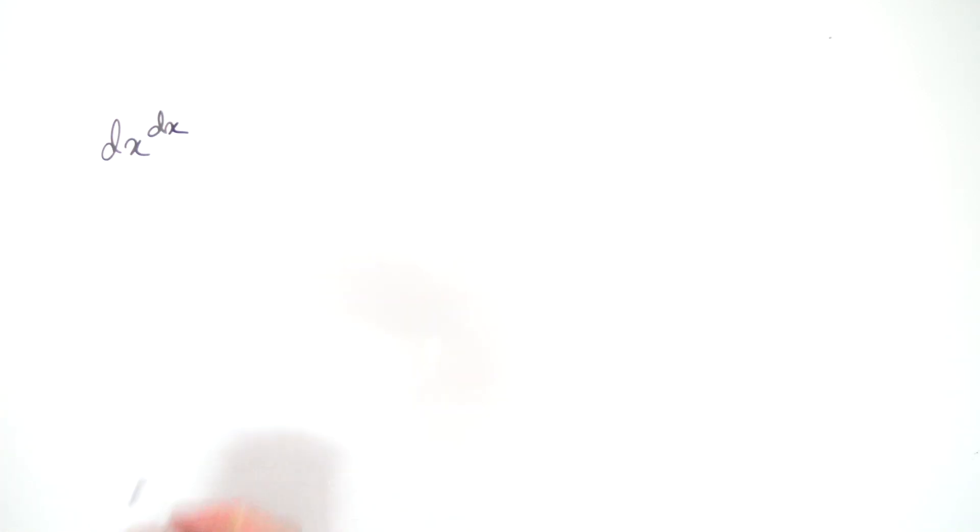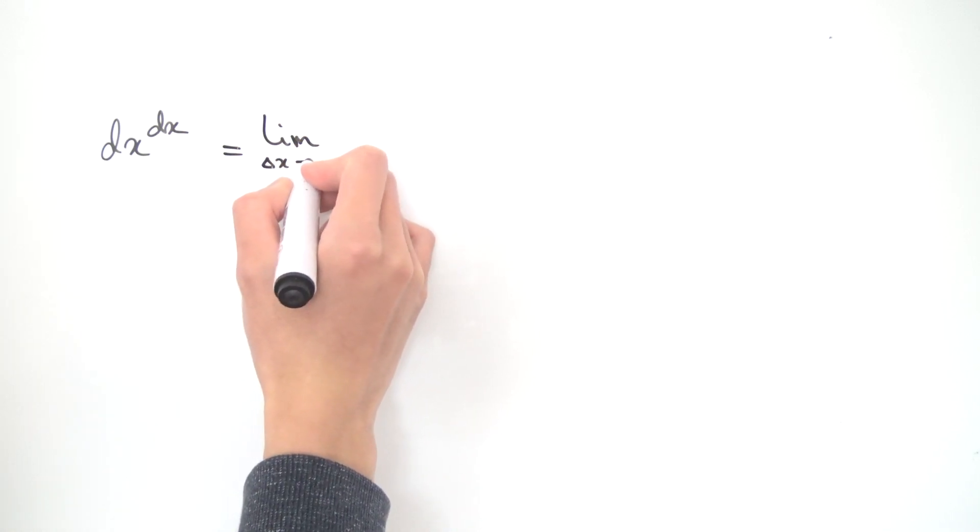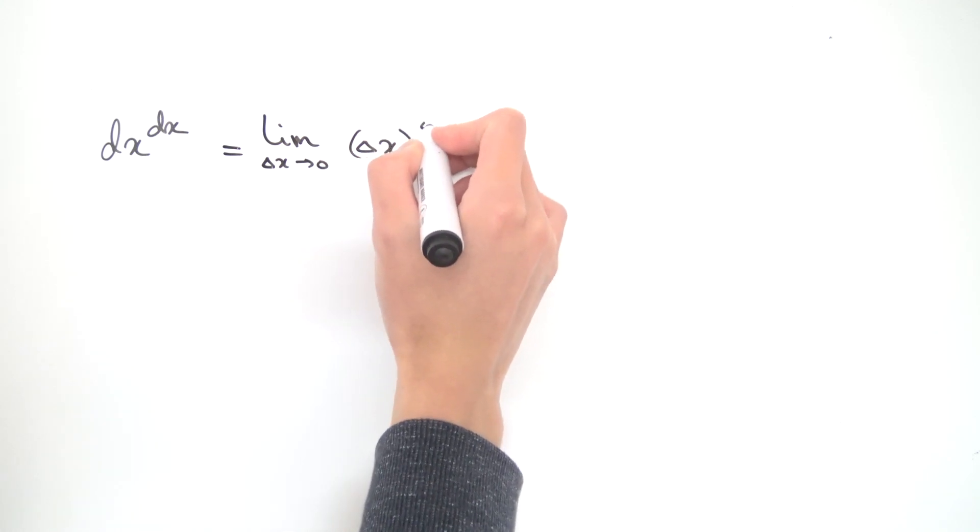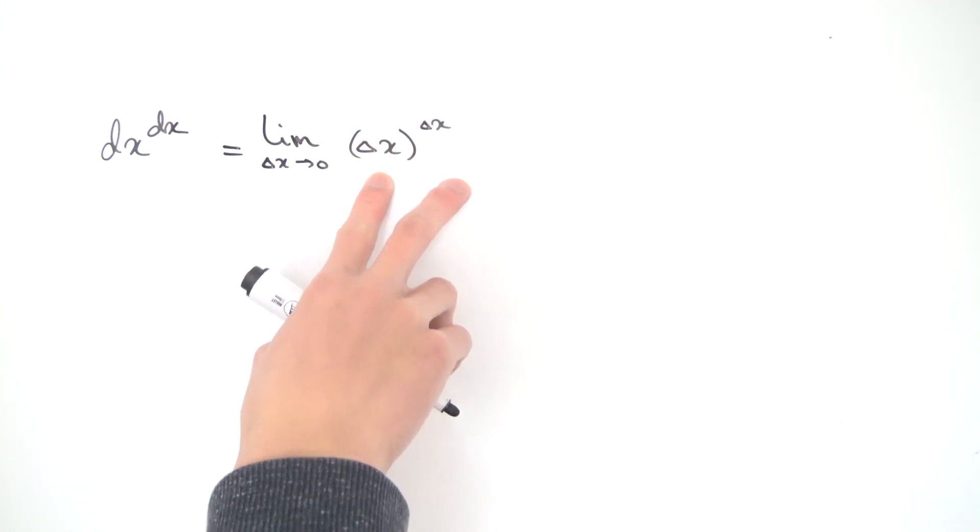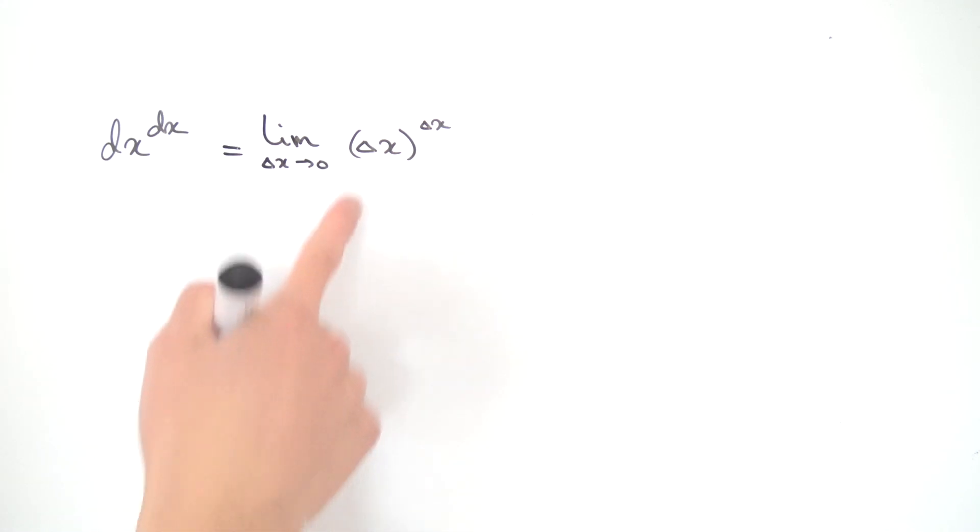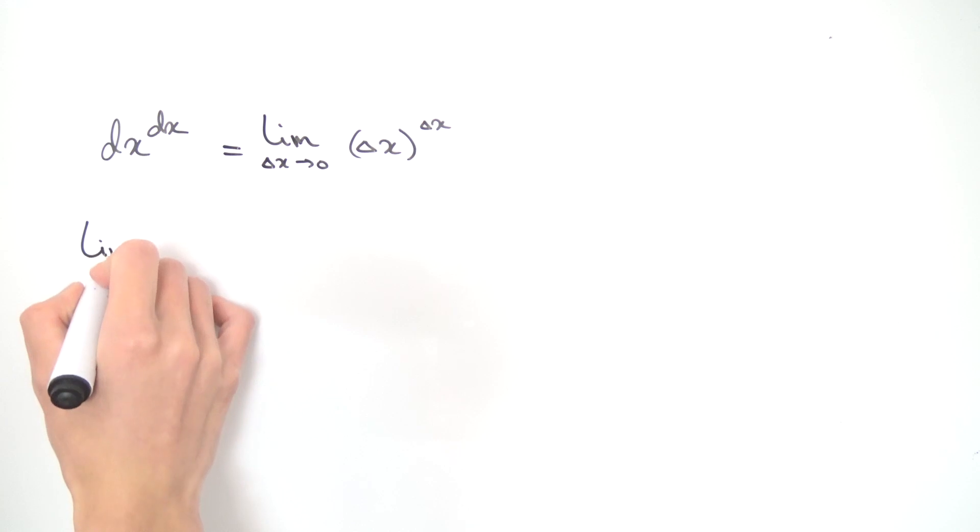Now dx, you can think of as being a quantity that just approaches zero. So you can kind of rewrite this as being the limit as some quantity delta x approaches zero of delta x raised to the delta x. So this is how you can think of dx. We can write it in terms of this limit. And let's see what this limit evaluates to. If you've seen this limit before, you know it evaluates to one. But if you haven't seen it before, maybe we'll do it down here quickly.